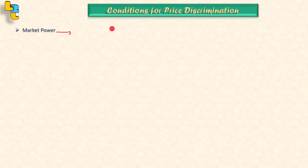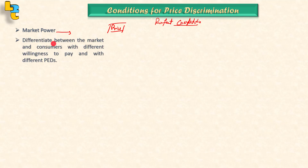The seller must have control over the price — it should be market power. If there is no control over the price, such as in perfect competition, then price discrimination will not be possible. The second condition is that our seller can differentiate between markets and consumers with different willingness to pay and different price elasticity of demand.